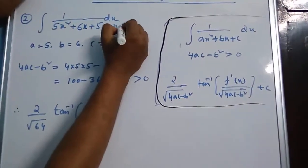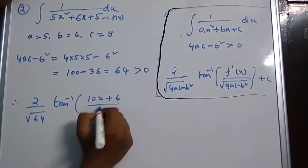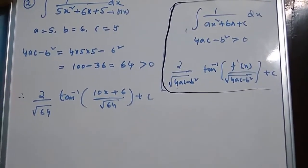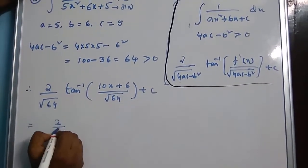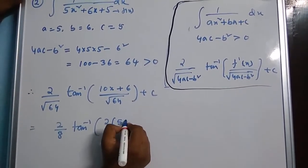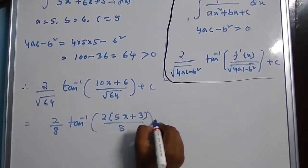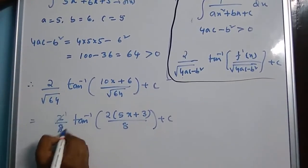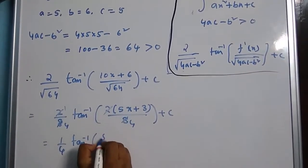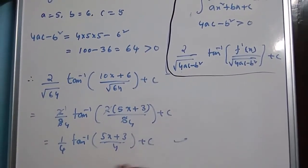Suppose the denominator is f(x) and find the derivative. The derivative of 5x squared is 10x, and of 6x is 6, so f dash of x is 10x plus 6, over root of 64, plus c. This equals 2 over 8 times tan inverse of, taking 2 as common from (10x plus 6), we get 5x plus 3, divided by 4, plus c. Simplifying 2 over 8 gives 1 over 4. The answer is (1/4) tan inverse of (5x plus 3) divided by 4, plus c.